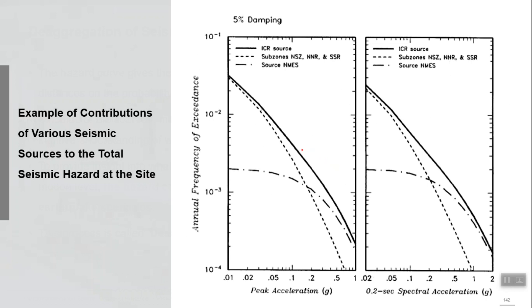Let us say this is an example: this solid black line is one combined hazard curve and these two dotted lines are from two different individual sources. You can see that in this PGA range, this dotted line gives you a high probability of exceedance, but in the high PGA range the other dotted line gives a high probability of exceedance. So I get information like: this PGA range can occur at my site from fault A, but this higher PGA range can occur from another fault — low-level earthquakes from one source and high-level earthquakes from another source.